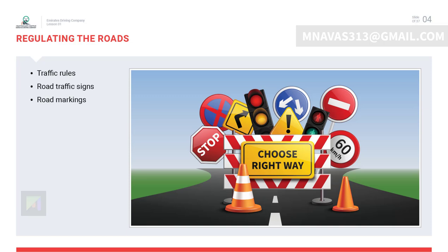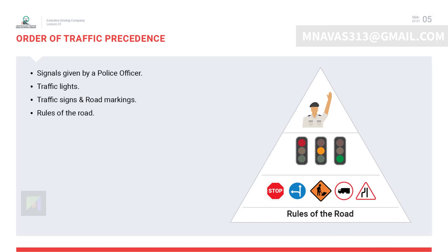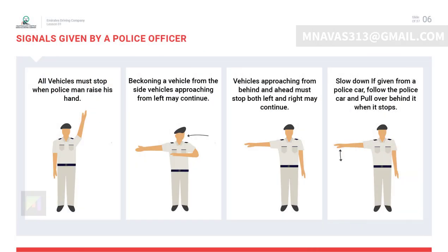When we face different situations where more than one instruction is given at a time, we have to think about the order of traffic precedence. The traffic police officer has precedence over everything — even if the traffic light is red, but the police officer has signaled you to proceed, you must follow the officer's instructions. The order is: traffic police officer, traffic lights, road traffic signs, and road markings.